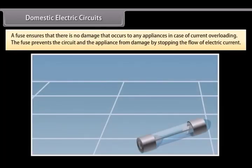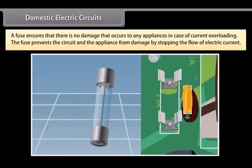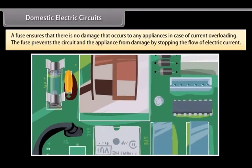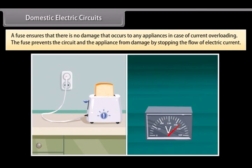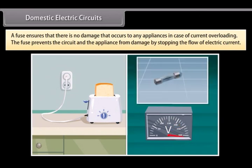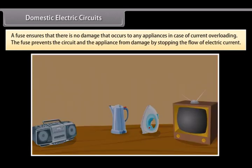A fuse is an important component of all circuits. It ensures that there is no damage that occurs to any appliances in case of current overloading. Overloading occurs when the live wire and the neutral wire come in contact with each other or there is a rise in the supply voltage. In this case, the fuse prevents the circuit and the appliance from damage by stopping the flow of electric current.